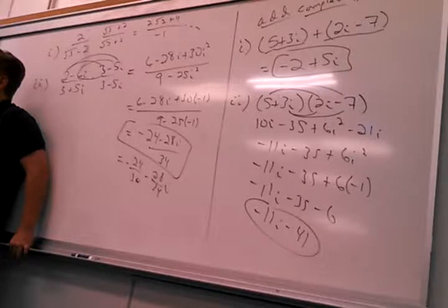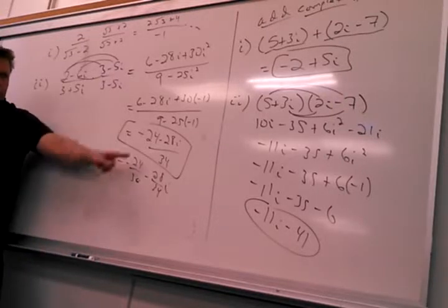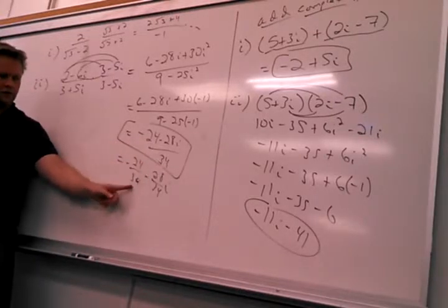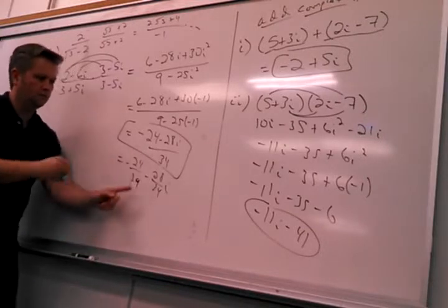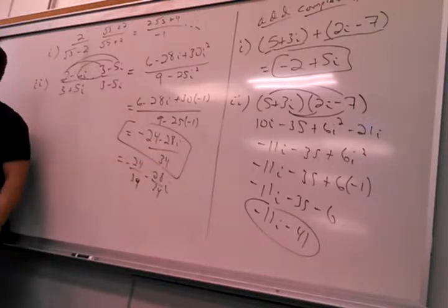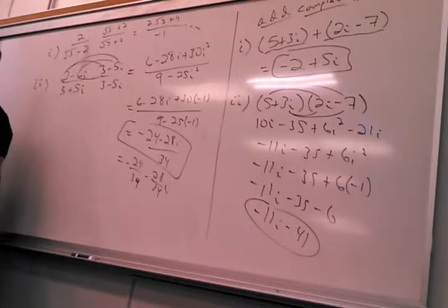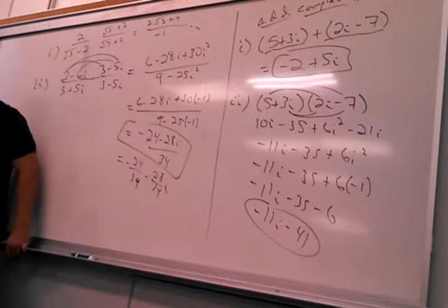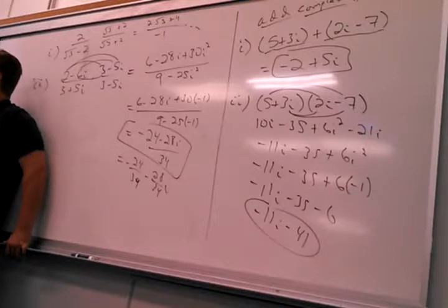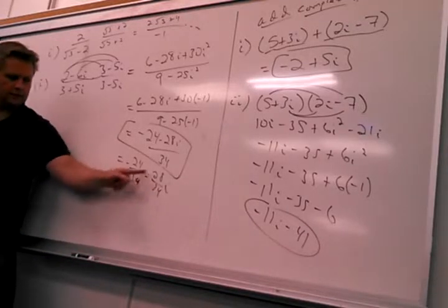Each of these is being divided by 34, so negative 24 over 34 minus 28 over 34. Does that blow your mind? You can totally do that, just like x over 3 is the same as one third x. Just want to show you this is b and this is a.